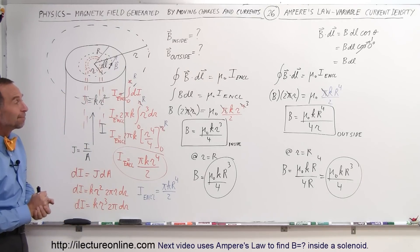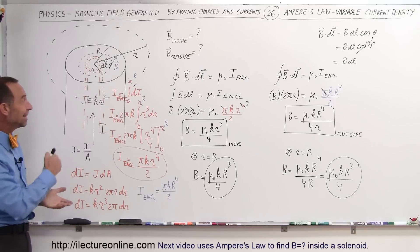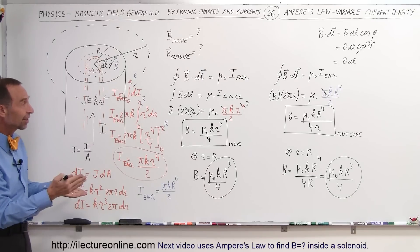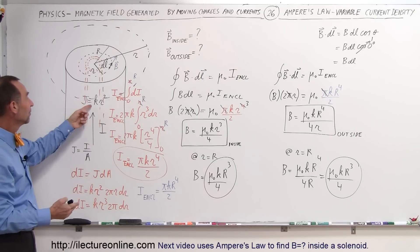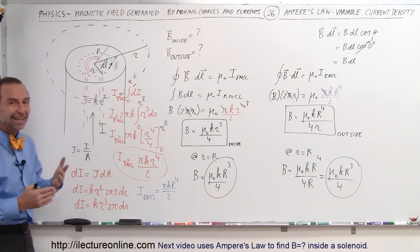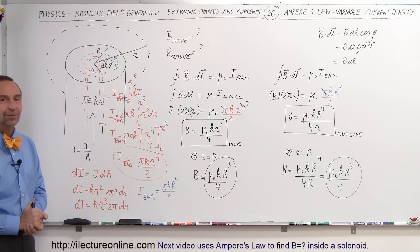That's how you find the magnetic field inside and outside a conductor when the current density is not constant. Thank you so much for watching.